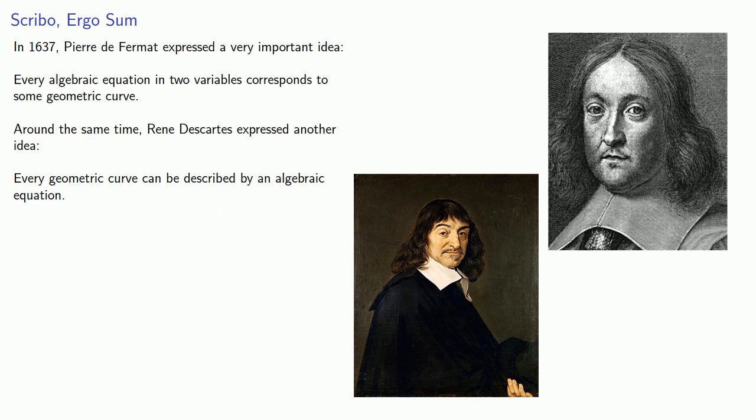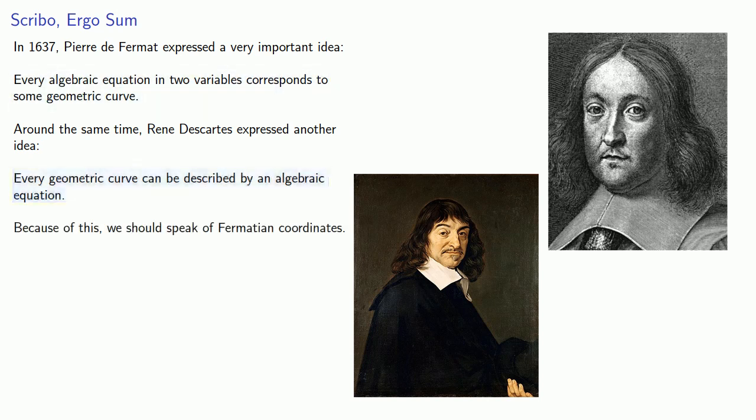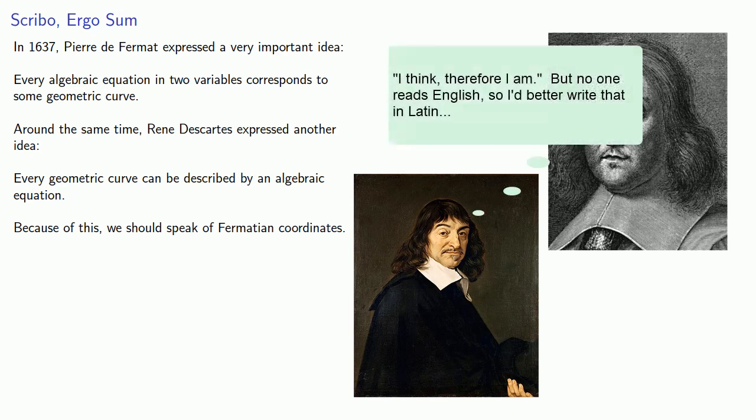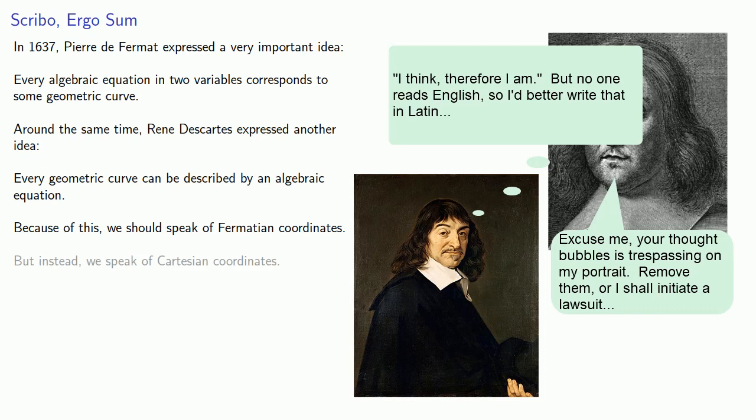Now, what we're actually doing has more in common with what Fermat was describing than with what Descartes was describing, and so we should speak of Fermatian coordinates. But because Descartes was a famous philosopher and Fermat was just a lawyer, we instead speak of Cartesian coordinates.